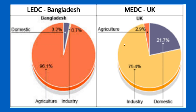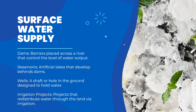Here is another example. In an LEDC like Bangladesh, 96.1% of their water is used for agriculture. Meanwhile, in an MEDC like the UK, 75.4% is for industry. You can just take a good look at that contrast.